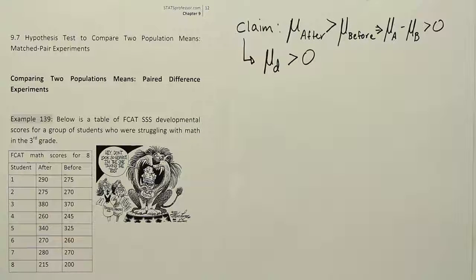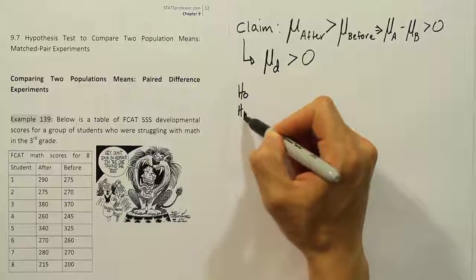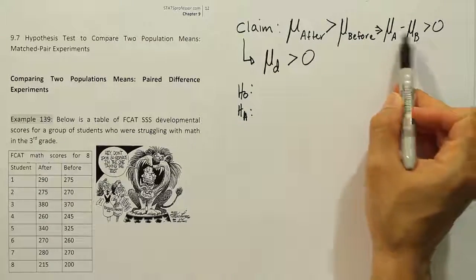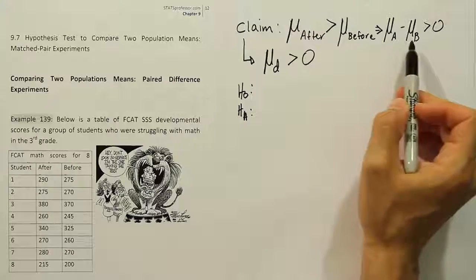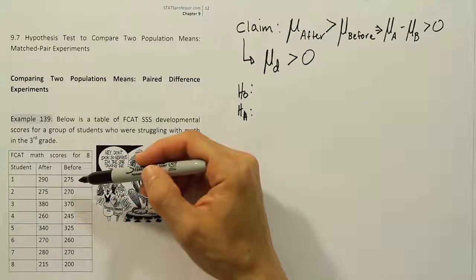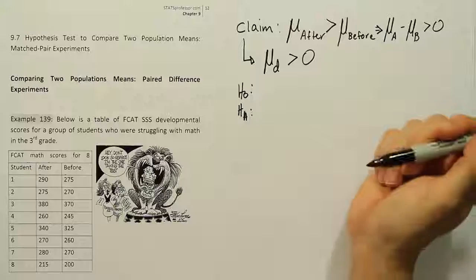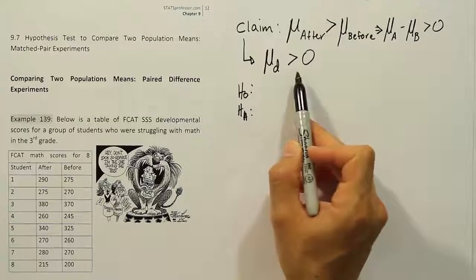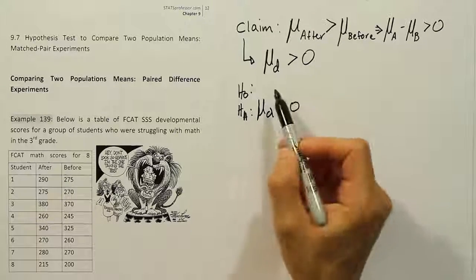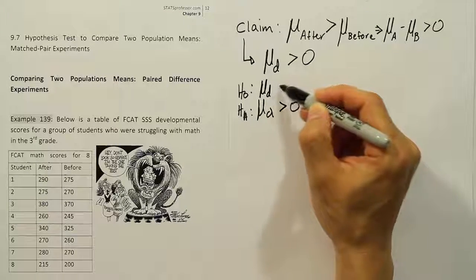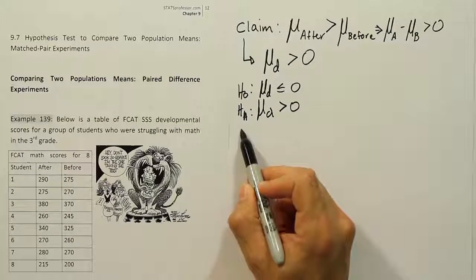Now that we have the claim, our next step is to write H₀ and Hₐ. One important note: notice it's after minus before. If we decide to express our claim that way, we have to be consistent when working with our data — always after minus before, not before minus after. Now, the claim has a greater than symbol, which makes it the same as Hₐ. H₀ has to express the opposite idea, so we say the average difference is less than or equal to zero.